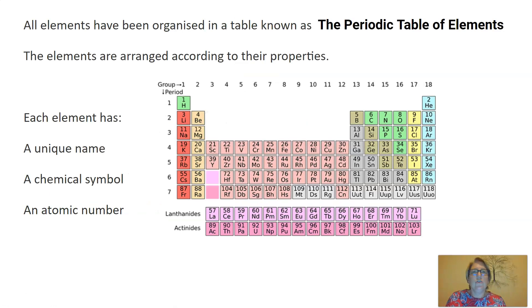In grade seven, you should have learned that all elements have been organized in a table known as the periodic table of elements. But if you haven't covered this yet, don't worry, we'll look more into it in future lessons. The elements are arranged according to their properties. If we have a look here, each element has a unique name, a chemical symbol, and an atomic number.